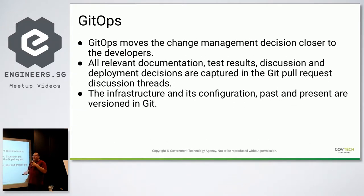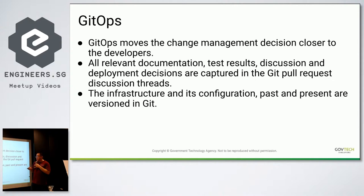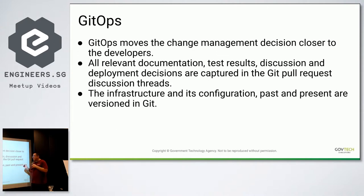Using the Git platform, you can do all your discussions and record results in the pull request discussion thread. Whoever is responsible for maintaining the Git repository can trigger the same automation to apply the deployment — everything is automated and recorded, tracked through your Git platform. The benefits of GitOps: it moves change management decisions closer to developers. All relevant documentation, test results, discussions, and deployment decisions are recorded in the discussion threads, and all versions of infrastructure and configuration — past and present — are versioned in Git.